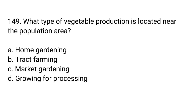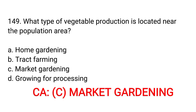Number 149. What type of vegetable production is located near the population area? A. Home gardening. B. Truck farming. C. Market gardening. D. Growing for processing. Correct answer is letter C. Market gardening.